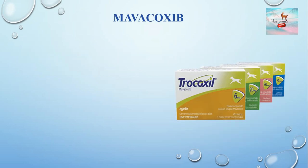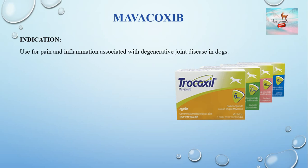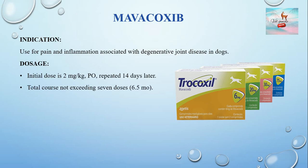Robenacoxib is indicated when dogs present with pain and inflammation associated with degenerative joint disease. Its initial dose rate is 2 mg/kg orally, repeated 14 days later. The total course should not exceed 7 doses.